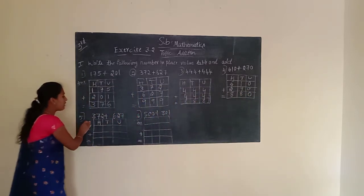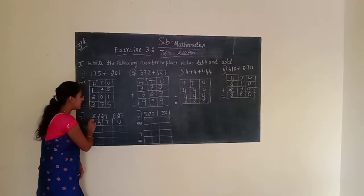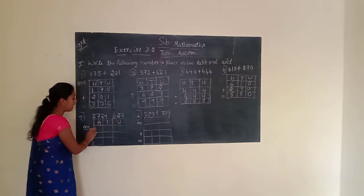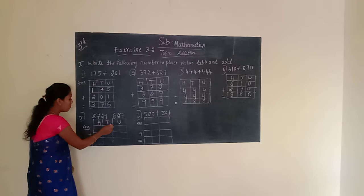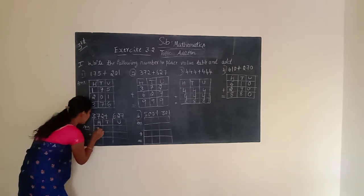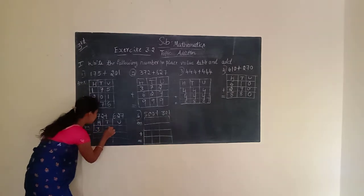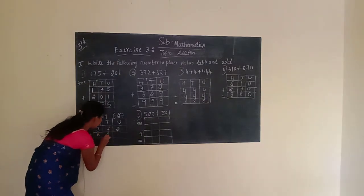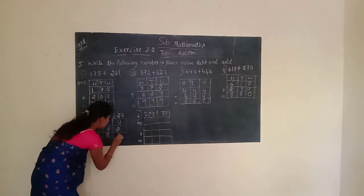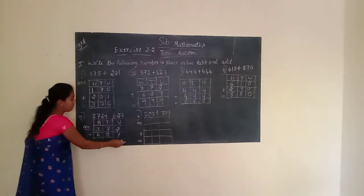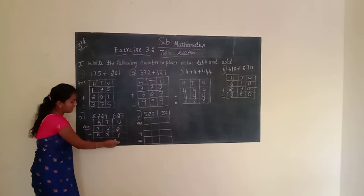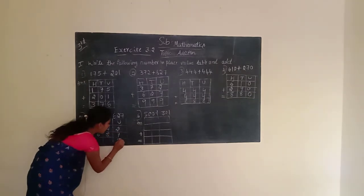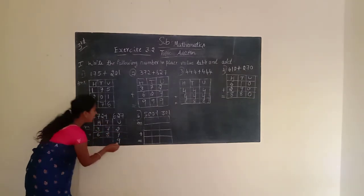Next, fifth question. The given number is 372 plus 627. Arrange this number in the place value chart — 372 plus 627. Now we have to start from the unit place. Unit place is having 2 and 7. 2 plus 7 is 9. We have to write 9.